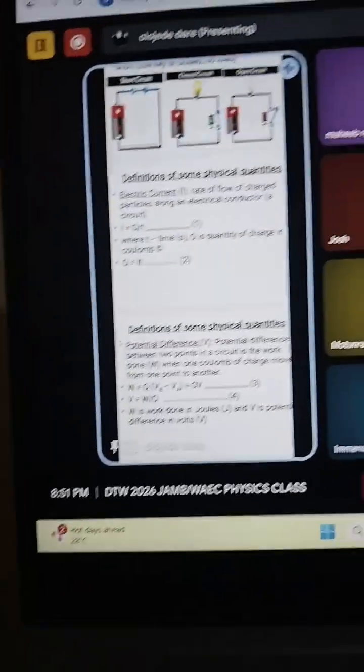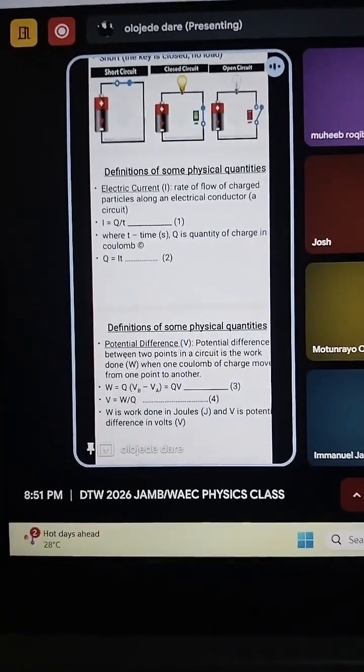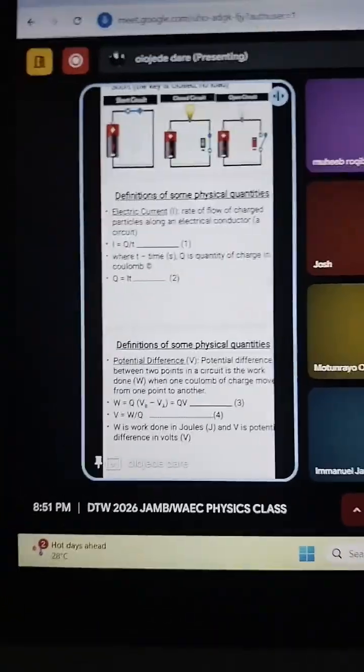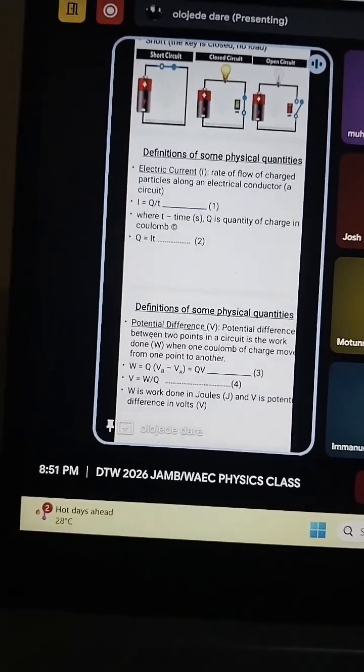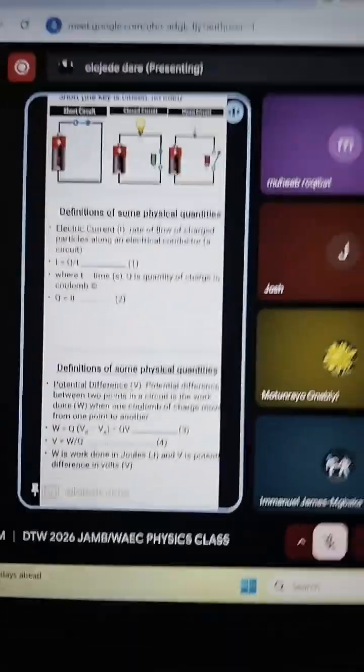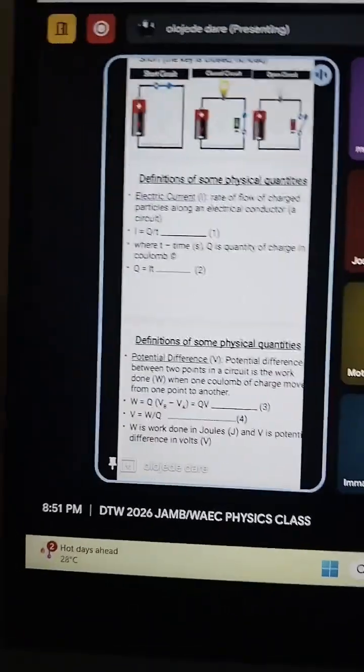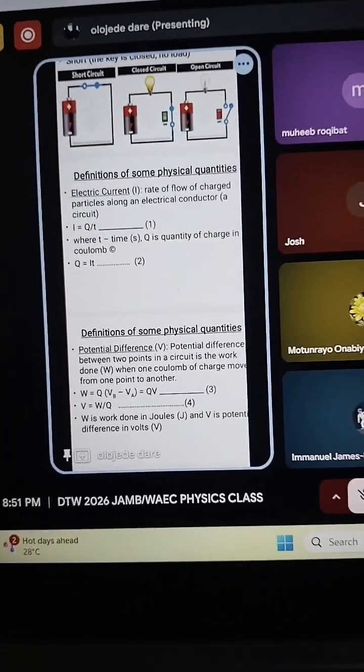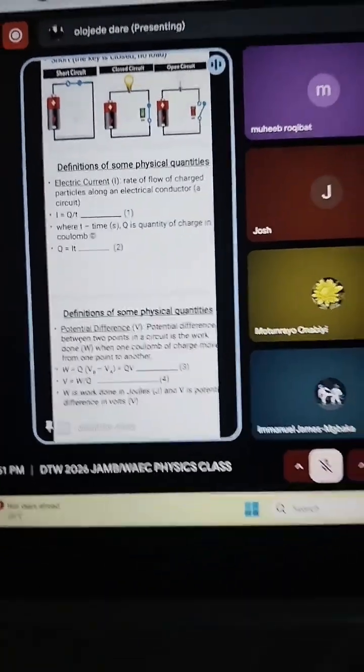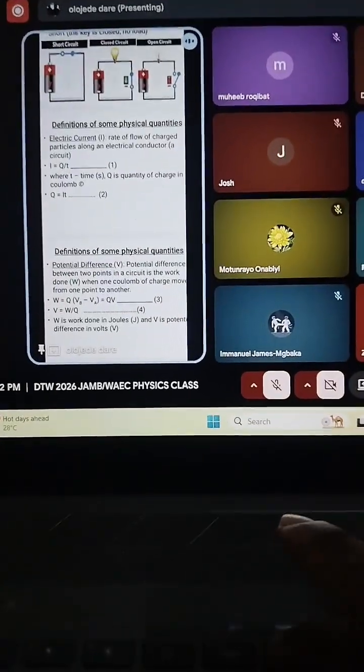So current is measured in ampere, A-M-P-E-R-E. And charge, quantity of charge is measured in coulomb. Time is measured in seconds. So 1 ampere is equal to 1 coulomb per second. So if you cross multiply, that's equation I equals Q over T, where Q equals IT. Okay.